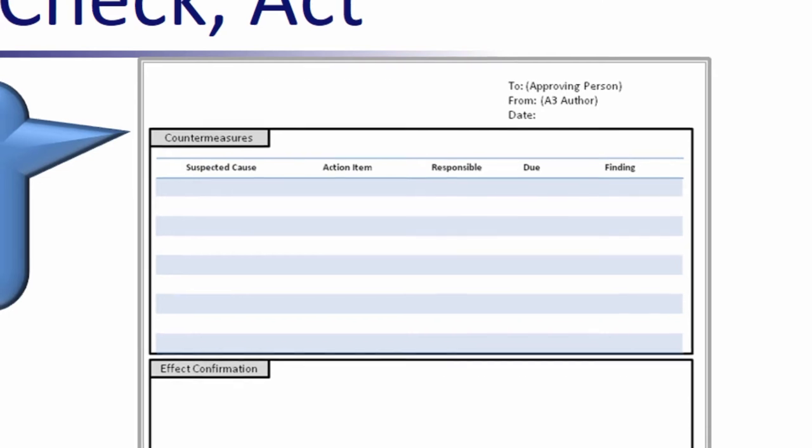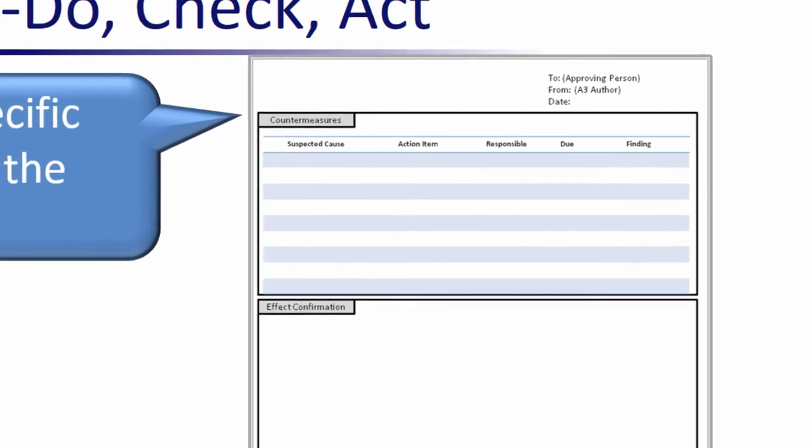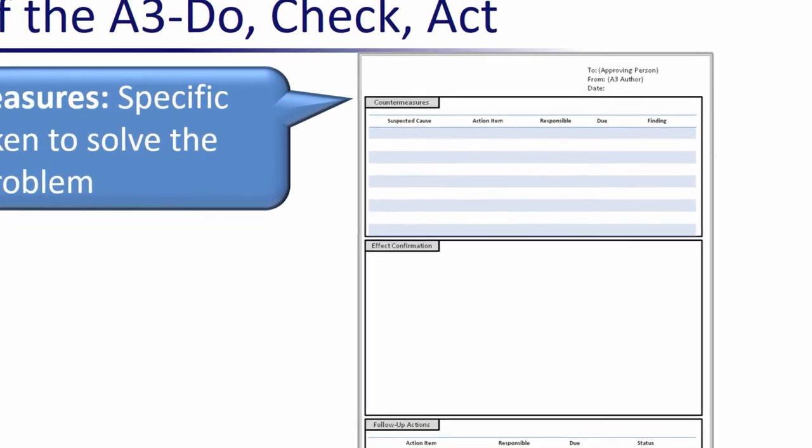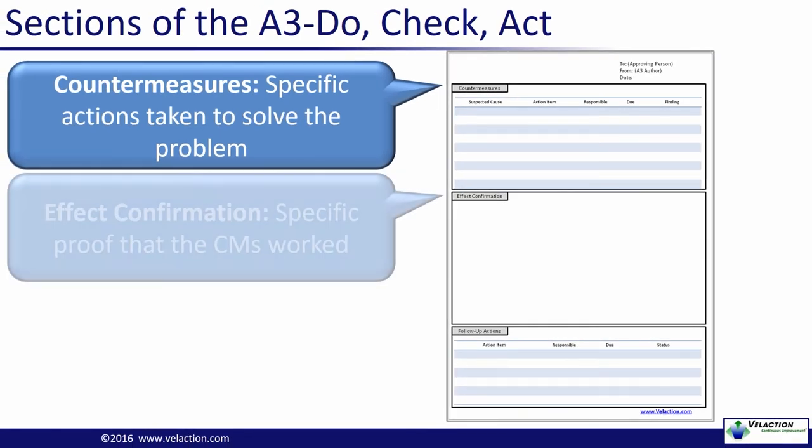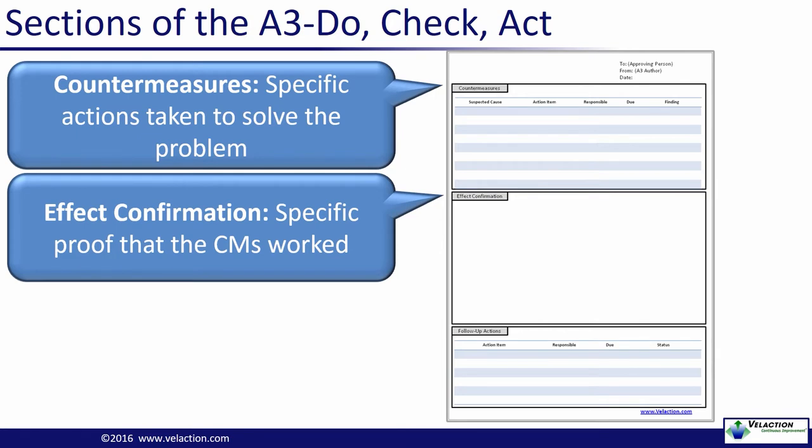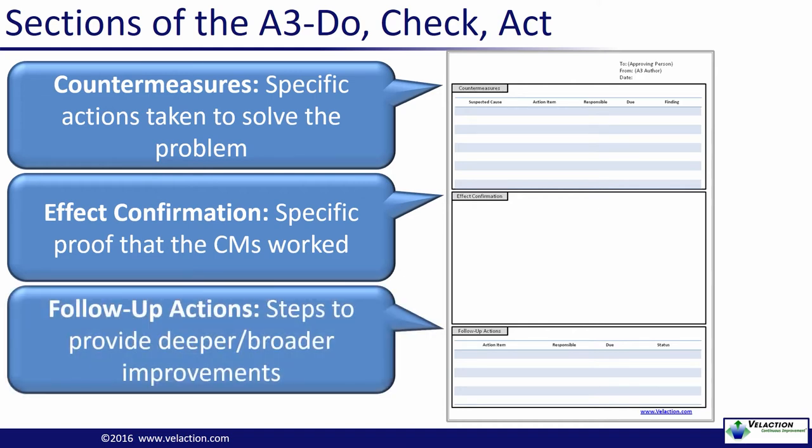A final point about the countermeasures section. Many will have their own PDCA cycle as you test how to implement them. You will be unlikely to get each one right the first time. Eventually though, you will complete the countermeasures and move on to confirming that the problem was indeed solved. Again, I want to stress that being able to properly predict the results is important. If you didn't get what you expected but still liked the results, you are relying on luck for improvement, not a good long-term plan. Following the problem-solving process is as important as getting good results.